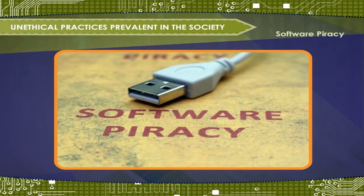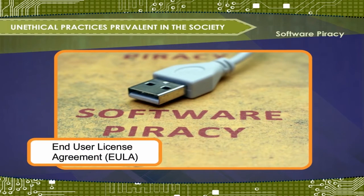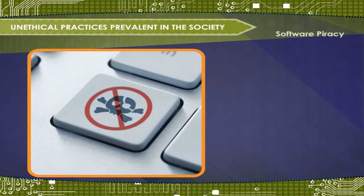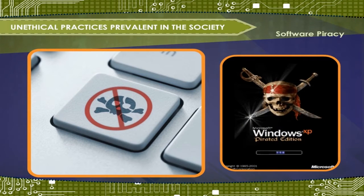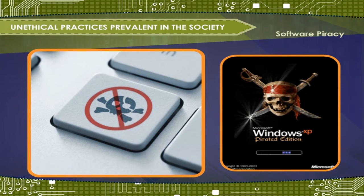When you purchase a commercial software package, an end-user license agreement or EULA is included to protect that software program from copyright infringement. Typically, the license states that you can install the original copy of software you bought on one computer and that you can make a backup copy in case the original is lost or damaged.